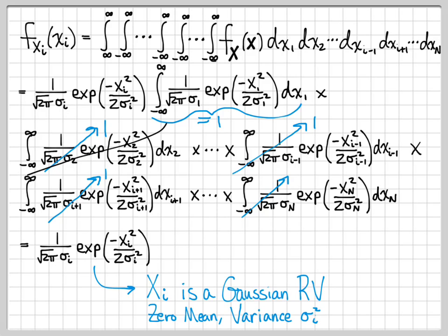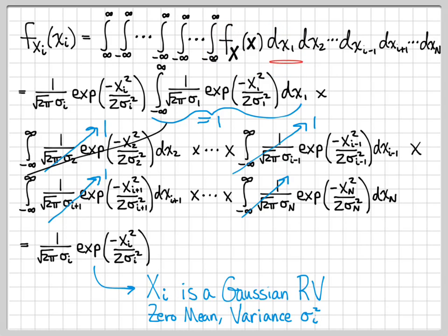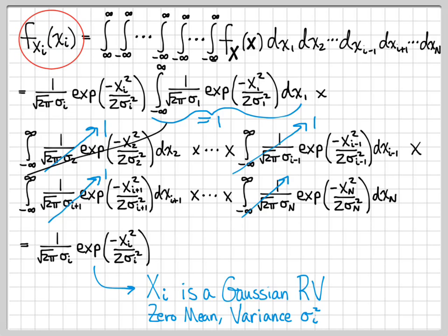So this is kind of obvious from the starting point — we could tell based on what we were given that our density function for our random vector factored out nicely. But we've actually gone through the tedious part of doing the real computation: taking our density function and integrating over every unwanted dimension to yield the marginal density that we were looking for.